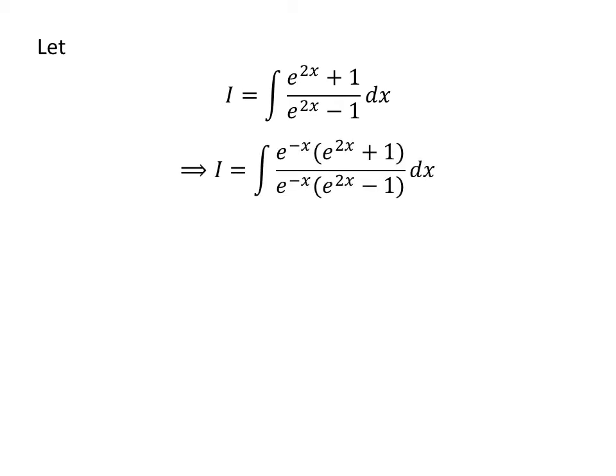Multiplying the numerator and the denominator of a fraction by a common factor does not change the value of the fraction. So, the numerator and the denominator of the integrand have been multiplied by the common factor e^(-x), and the brackets have been opened.